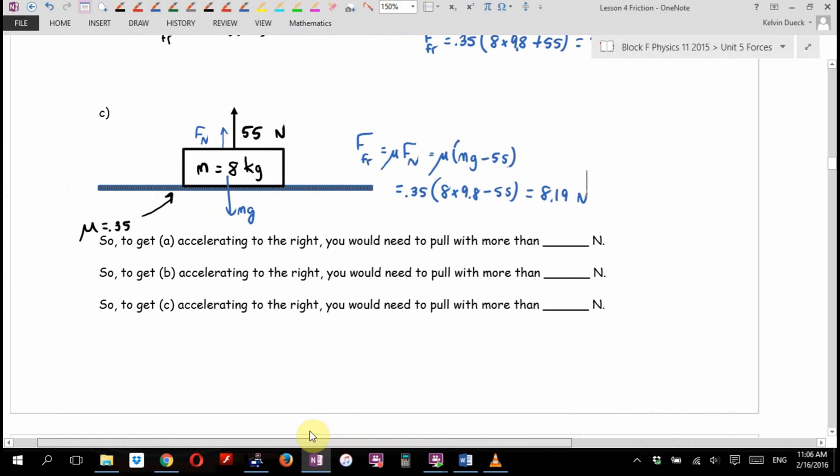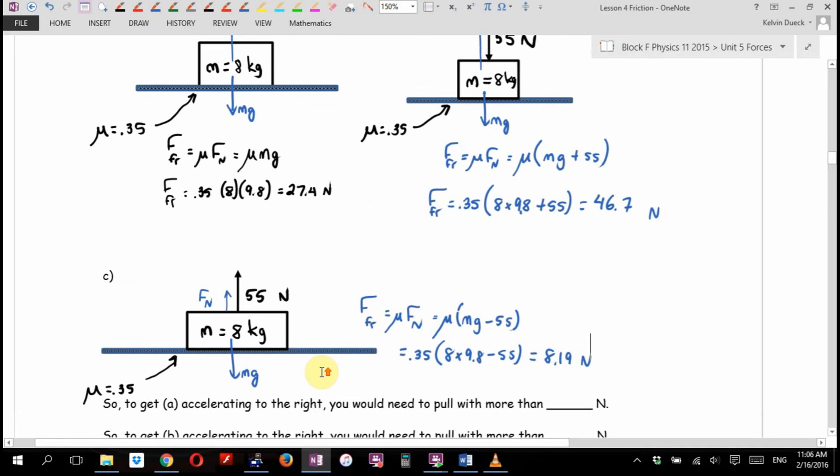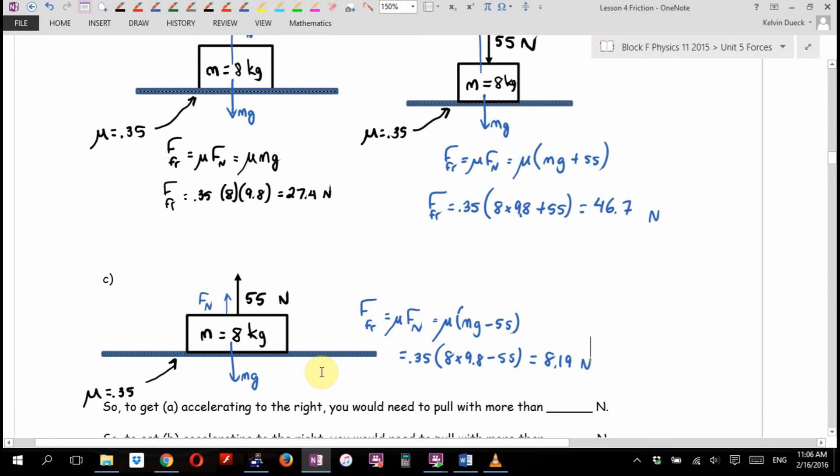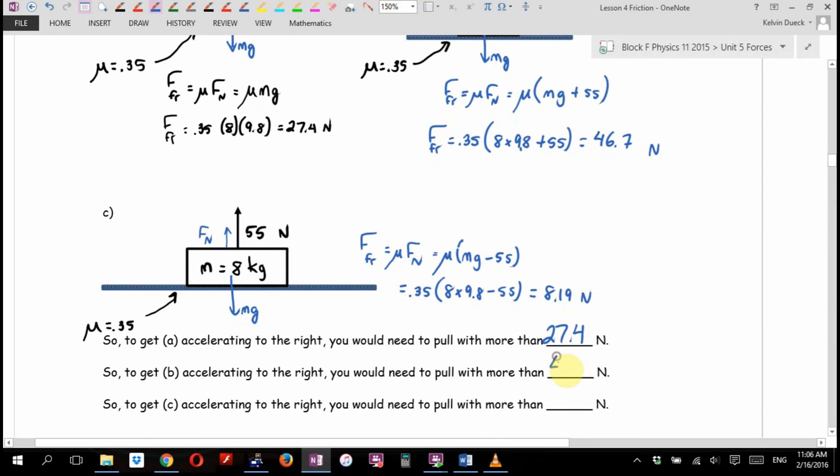Here's our summary. If I wanted to get A accelerating, I would have to pull with a force bigger than 27.4 newtons. Otherwise, this is not going anywhere. If I wanted to get B accelerating to the right, I would have to pull with a force bigger than 46.7 newtons. If I wanted to get C accelerating to the right, I would have to pull with a force bigger than 8.19 newtons. Friction is mu times the normal force.